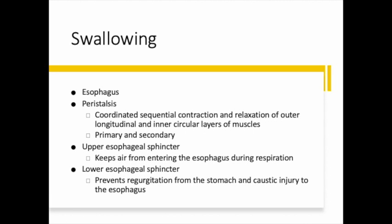Peristalsis is stimulated when afferent fibers distributed along the esophagus sense a change in the tension of the esophageal walls. If we put food through the esophagus, it stretches — and the more food, the more it needs to stretch. The greater the tension, the greater the intensity of esophageal contraction. Sometimes when we swallow too much or too fast, this contraction can be mistaken for pain that feels very similar to chest pain like angina, heartburn, or dyspepsia.